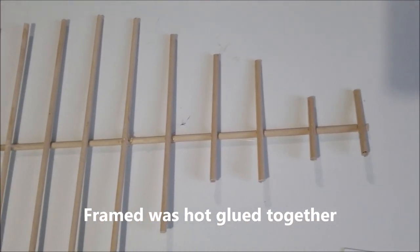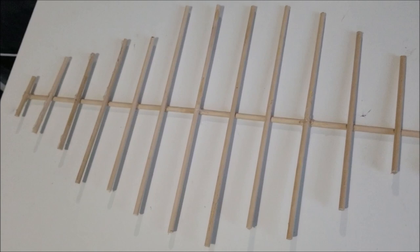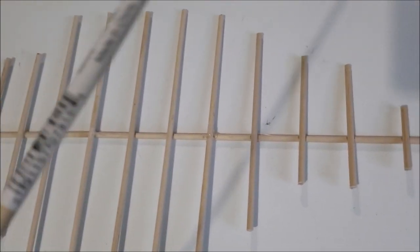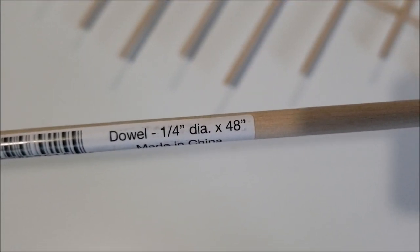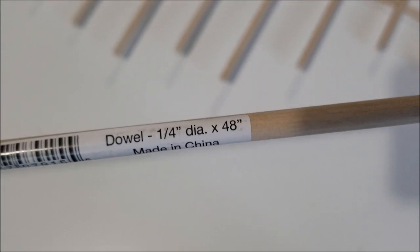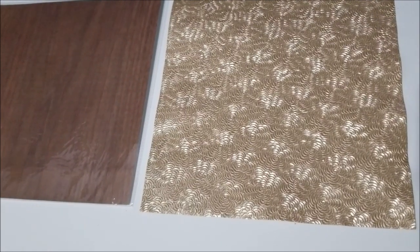These dowels come in 48-inch lengths and I got them for two dollars and change at AC Moore. I used about two and a half of them. I got these sheets from Michaels for a dollar ninety-nine each.